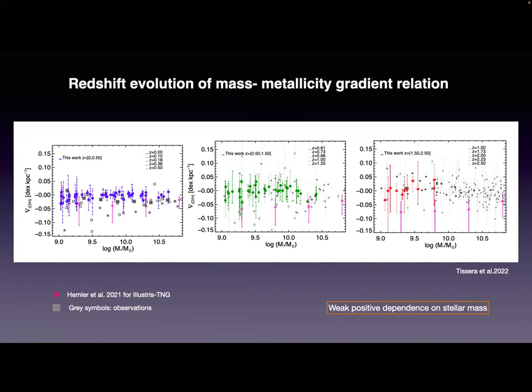The observations also show a very weak trend when analyzed the same way — no clear evidence of a metallicity gradient versus stellar mass relation as a function of redshift. We still do not have many observations at high redshift, and the existing observations have large measurement errors. There is also a problem with metallicity indicators, which depend a lot on how they are estimated and calibrated; all these calibrations are done at redshift zero and then extrapolated to higher redshift. There is still much to understand about how the metallicity gradient depends on stellar mass as a function of redshift.